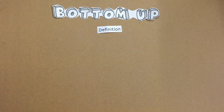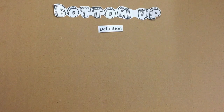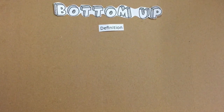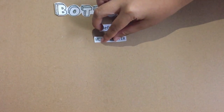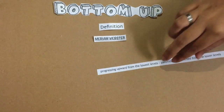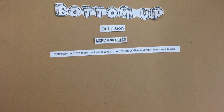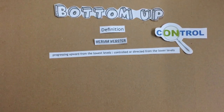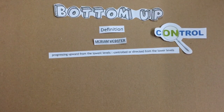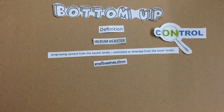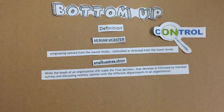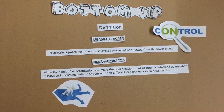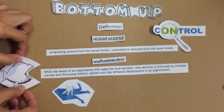Let's move along to the bottom-up definition. What is bottom-up? We have definitions from the same sources, Merriam-Webster and smallbusiness.com. According to Merriam-Webster, bottom-up is an approach where the idea and decision is controlled or directed from lower levels of hierarchy and then progresses upwards towards top management. From smallbusiness.com, bottom-up management style is where the final decision is still made by the heads of the organization, but the idea-giving and details are informed by member surveys and by discussing realistic options with different departments in an organization.